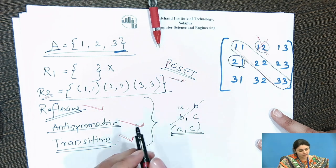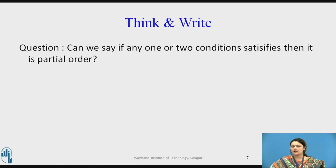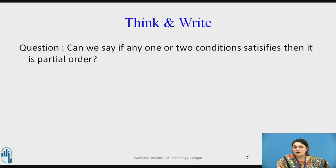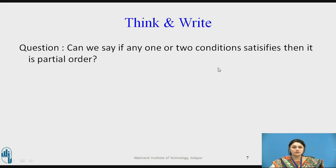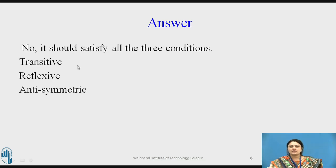Think and write: Can we say a relation is a partial order if only one or two conditions are satisfied — for example, if it is anti-symmetric and transitive but not reflexive? The answer is no. It must satisfy all three conditions: transitive, reflexive, and anti-symmetric.